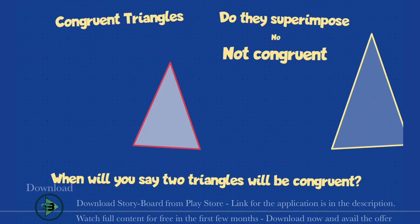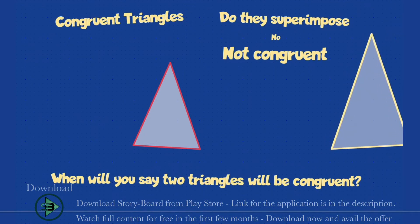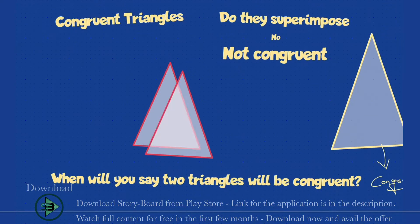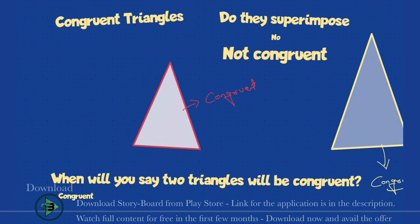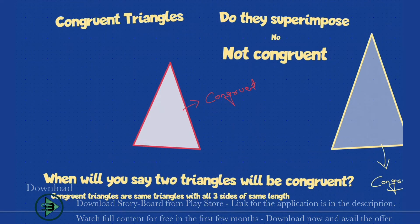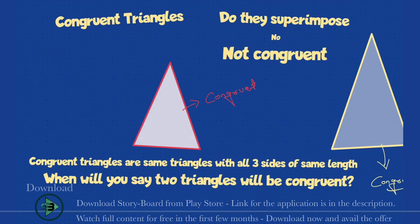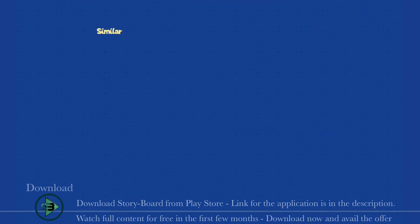When will the triangles be congruent? If I draw a replica of this yellow triangle, it will superimpose on the yellow triangle, which means those two yellow triangles are congruent to each other. Similarly with the red triangle — I draw a replica and place it on the red triangle, so those two red triangles are congruent. Simply put: two triangles are said to be congruent when all three sides are of the same length, or you can superimpose one triangle on the other.